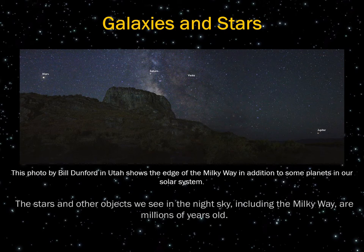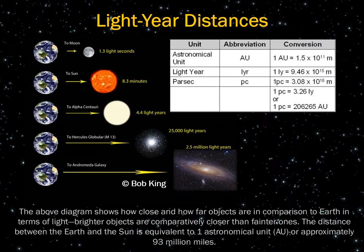We know the ages of star systems like the Milky Way based on their luminosity — younger stars glow brighter — and their distance, measured in light years as compared to Earth. Light years are how far light travels in one year. This photo by Bill Dunford in Utah shows the edge of the Milky Way, along with some planets in our solar system like Mars, Saturn, and Jupiter. The distance between the Earth and the sun is equivalent to one astronomical unit, or AU, approximately 93 million miles distant.